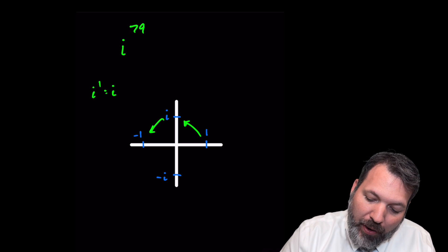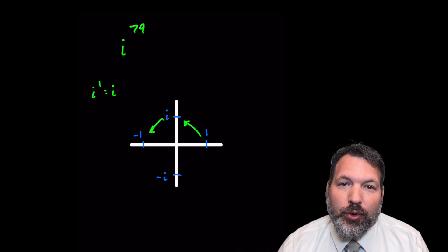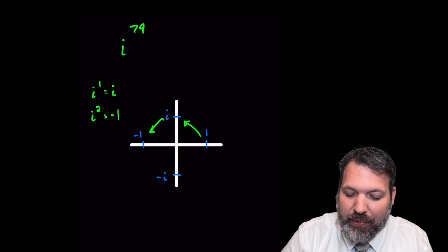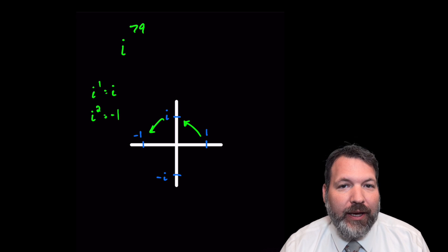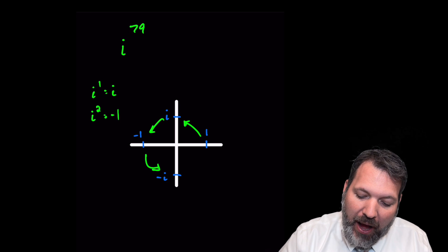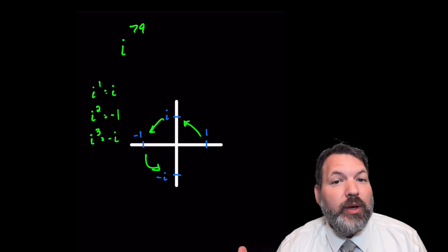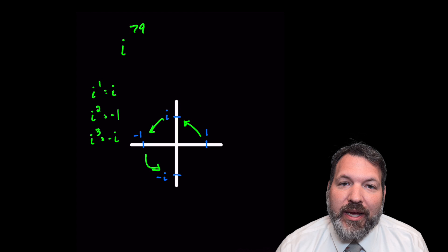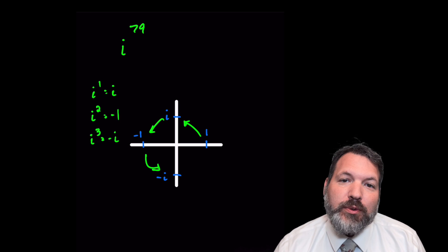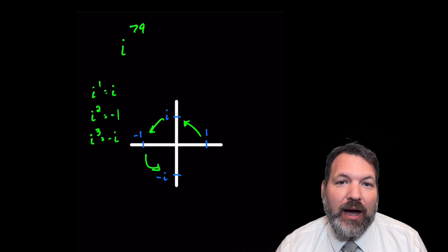When we perform another multiplication by i, it's going to rotate the coordinate plane 90 degrees once more, and that's what we mean when we say that i squared is equal to negative 1. If we multiply by another i, that gives us the third power of i, which through another rotation takes us over to negative i. So i to the third is equal to negative i.